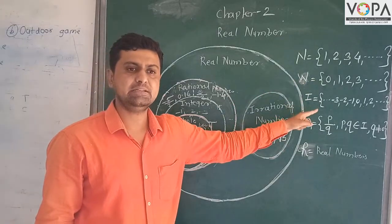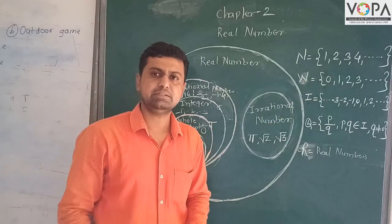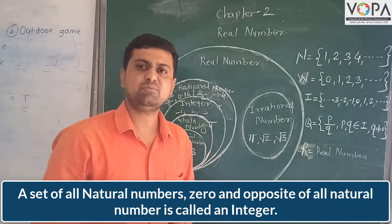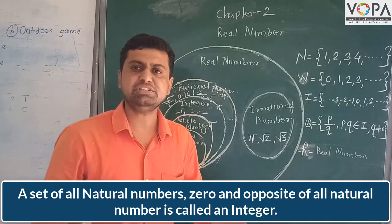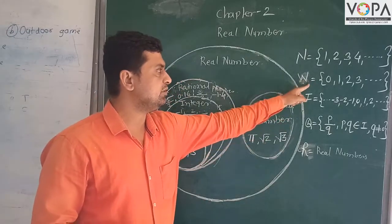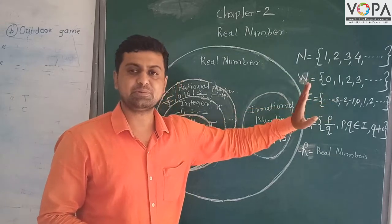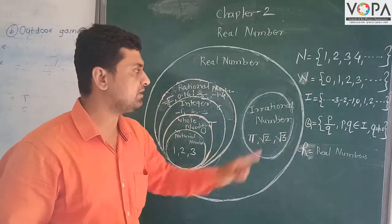What is the integer? The set of all natural numbers and the opposite of all natural numbers is called the integers. Whole numbers plus natural numbers plus minus 1, minus 2, minus 3, minus 4.